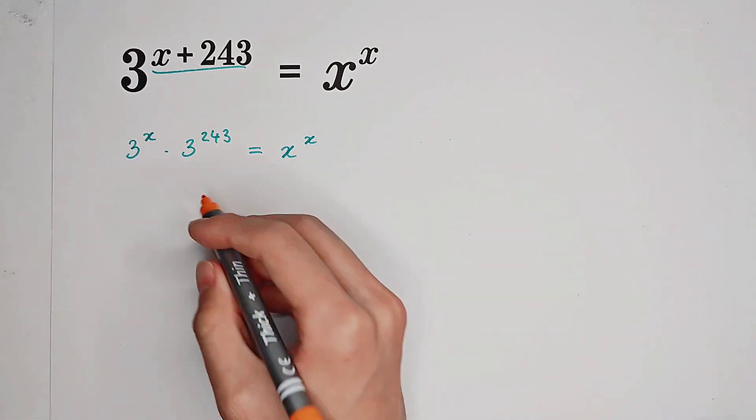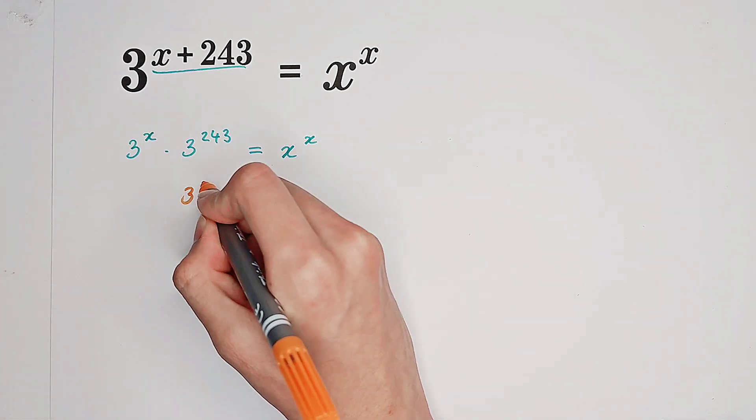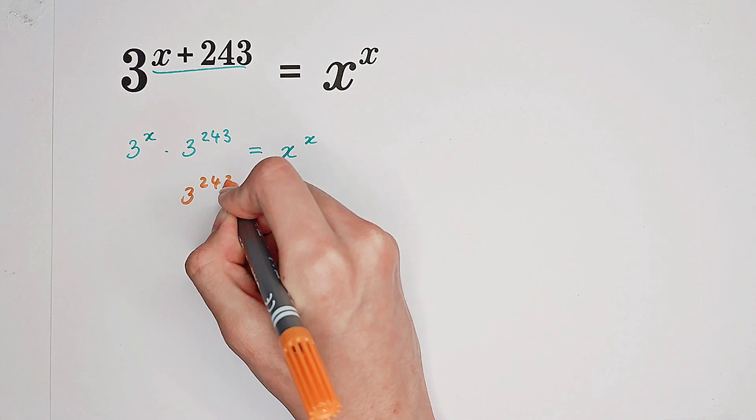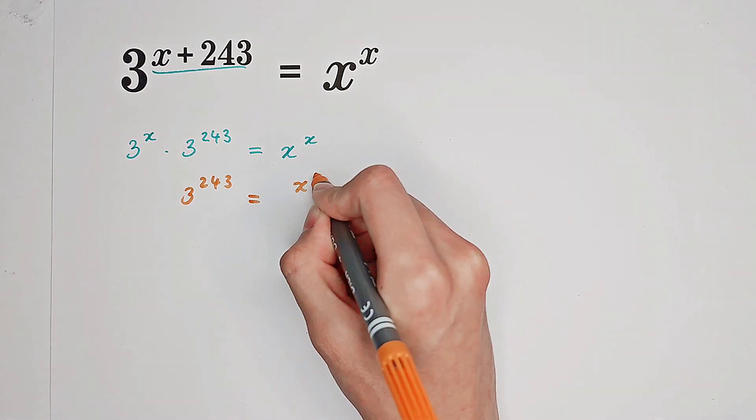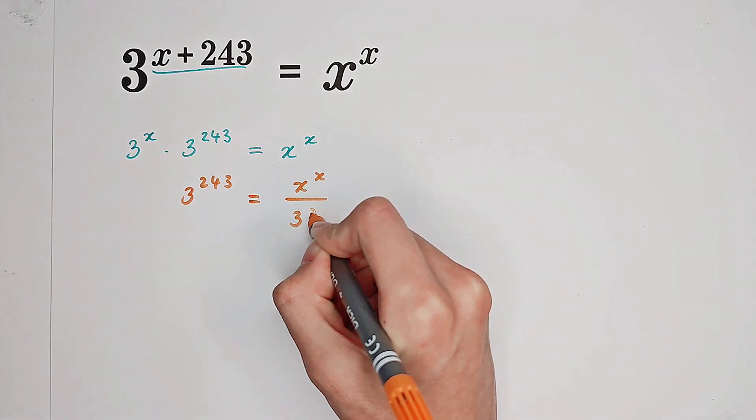Now we can divide both sides by 3 to the power of x. So then we get 3 to the power of 243 equals x to the power of x over 3 to the power of x.